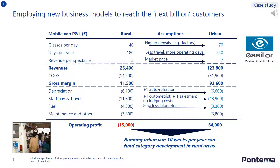The effect of these business model changes has been to help fund Essilor's development and expansion into rural areas. The numbers on this slide testify that by changing some of its business model components and focusing on urban areas for 10 weeks a year, Essilor has been able to generate profit in urban areas, which it intends to use to fund its development in rural areas.